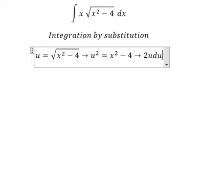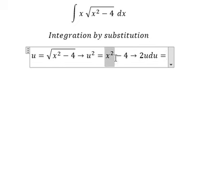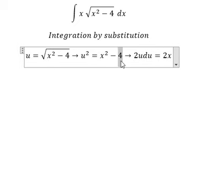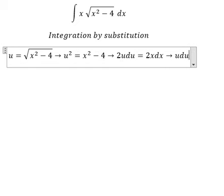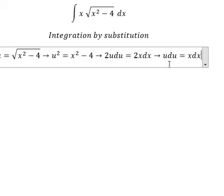This one we have 2u, this one we have 2x, this one is about the constant so you got number zero. Now we need to simplify by dividing by 2 for both sides, and we have like this.